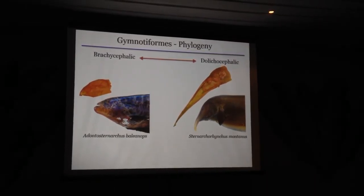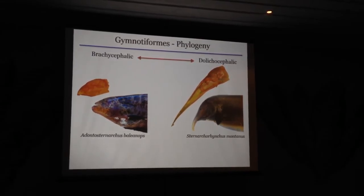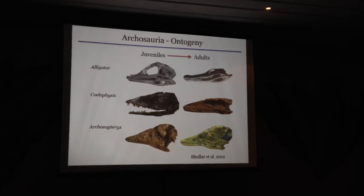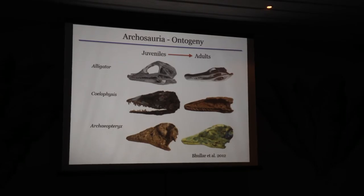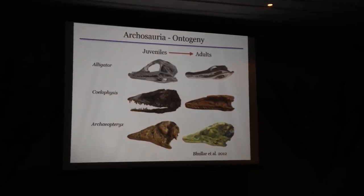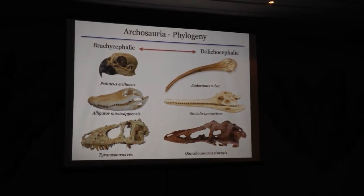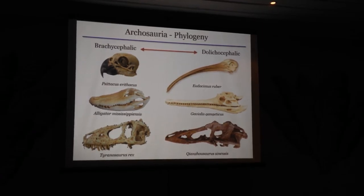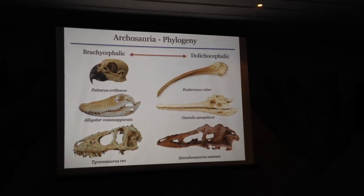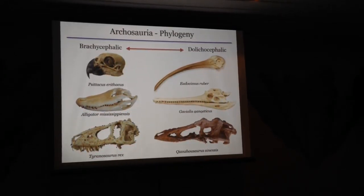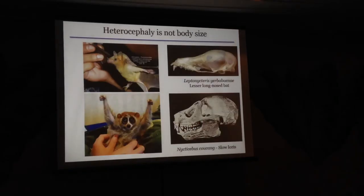Here is that same axis in electric fishes — one of the more dolichocephalic species on the right, and a very brachycephalic species in the same genus on the left. We see this in development in archosaurs as well. This is an excellent paper by Bhullar et al. looking at growth in some extant and some extinct archosaurs. Here are some differences among archosaur species, showing highly brachycephalic birds and crocodilians. Even within the family Tyrannosauridae, you have Tyrannosaurus rex, which is relatively brachy compared to that new fossil tyrannosaur originally described in China — the Pinocchio Tyrannosaur.